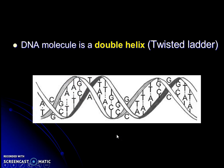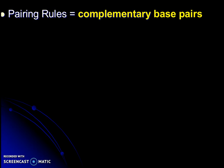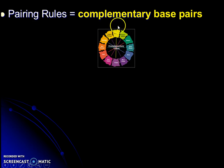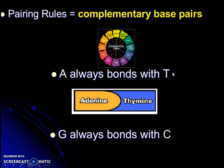Looking at the nitrogen bases, A always seems to be connected with something in particular — are you noticing a pattern? Those patterns are called the base pairing rules. Some of those nitrogen bases like to be paired with specific others, and these you have to memorize. They are called complementary bases — kind of like the complementary color wheel, where some things go better together. A always bonds with T, and G always bonds with C.